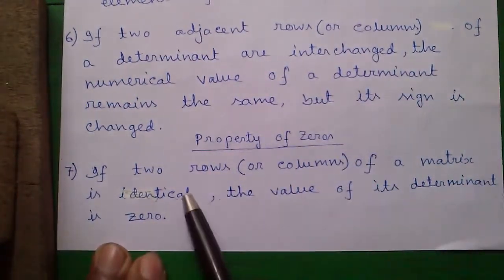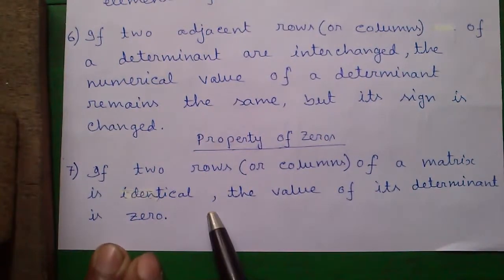So if two rows or columns of a matrix is identical, the value of its determinant is 0.